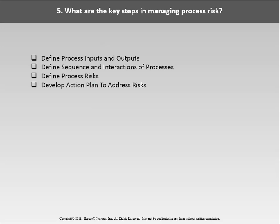The standard requires four key steps to manage process risk: first, define the inputs and outputs of each process. Second, if you have multiple processes, define their sequence and how they interact. Third, for each process, define the risk. Fourth, once all risks are identified, develop a plan to address them. When you complete a risk assessment of your processes, you will have more risk than you have time, money, and people to deal with — so prioritization is essential.